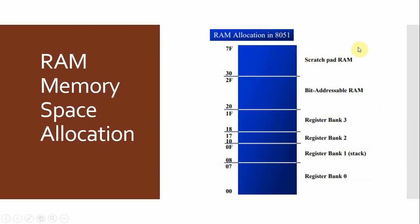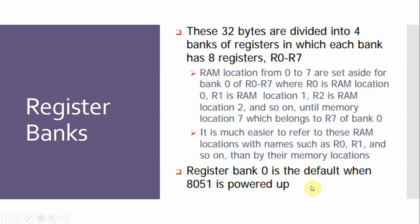Here you can see the RAM allocation in the 8051: locations 7F to 30 are for scratch pad RAM, 2F to 20 are for bit-addressable RAM, and then 1F to 18 is register bank 3, 17 to 10 is register bank 2, 0F to 8 is register bank 1 — also used for the stack — and 00 to 07 is register bank 0.